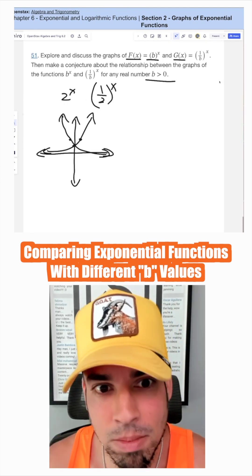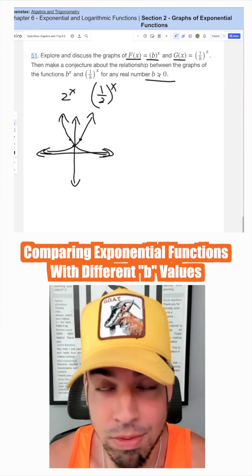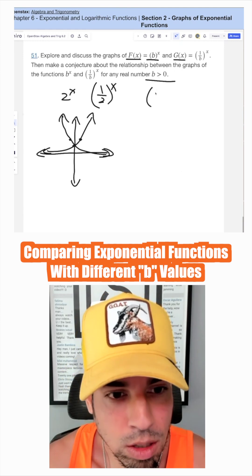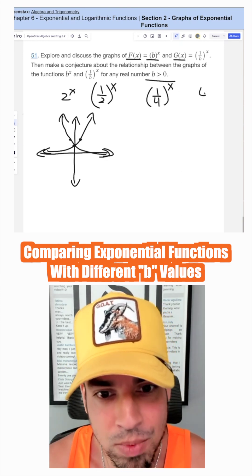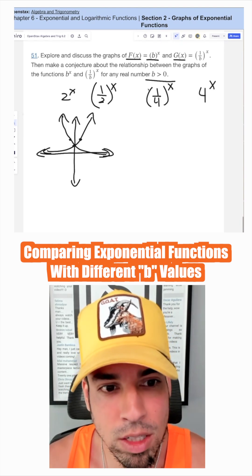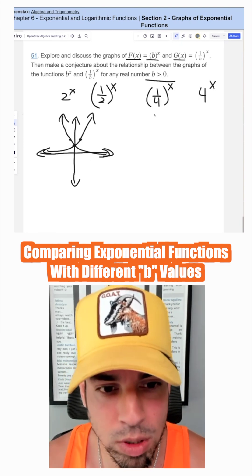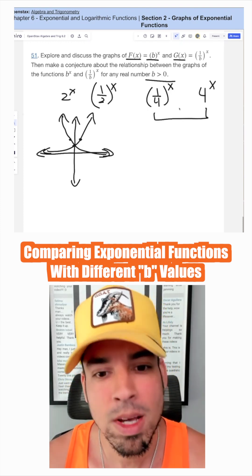Now, the same thing is going to happen even if b is a fraction, let's say b is 1/4. Then we'd have 1/4 to the x for the original, then 1 over b would be 4 to the x. So when b is between 0 and 1, we still have this reciprocal relationship, but it's just flip flopped.